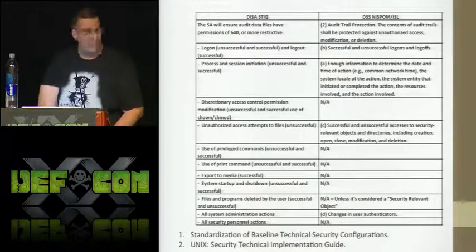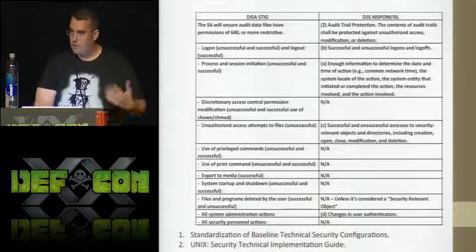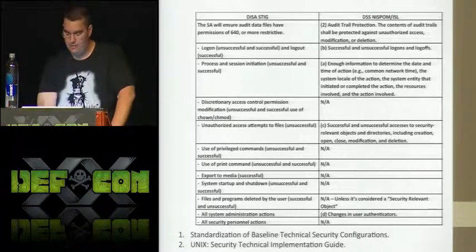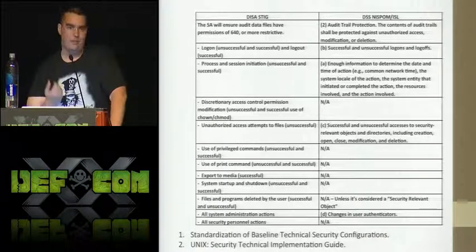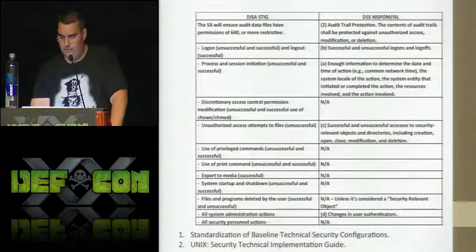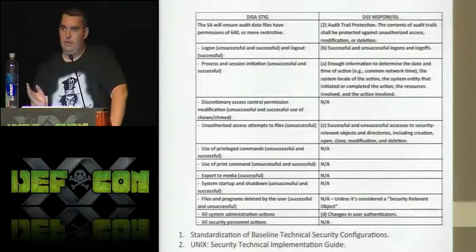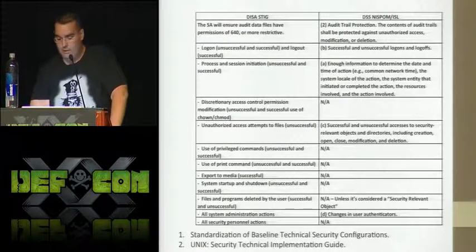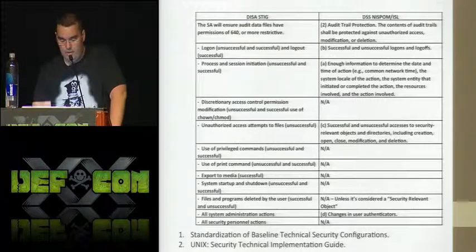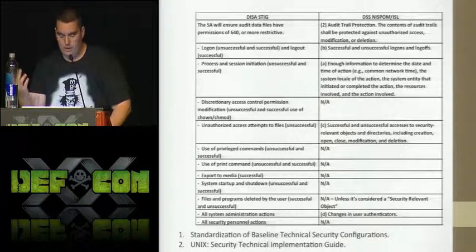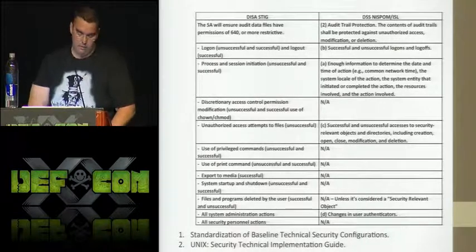I did a quick comparison between what the DISA STIGs call for and what the NISPOM and ISLs cover. DISA is the Defense Information Systems Agency — they come out with controls for SIPR net, NSA net, FBI net. The STIGs are really quite secure and cover a lot of different things. We don't cover discretionary access controls at all. We don't care if you use privileged commands. We don't care if you print things. We don't care if you take things off the system. These are things we should care about the most.